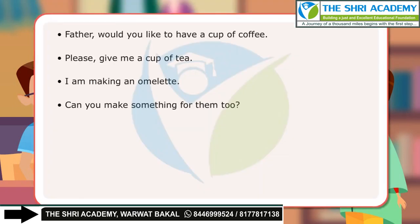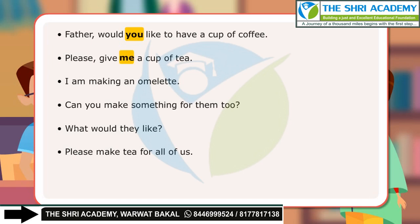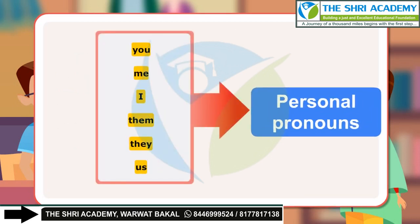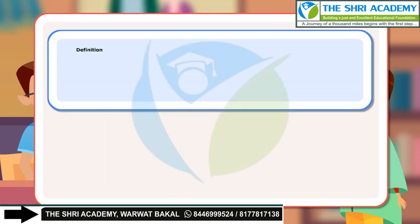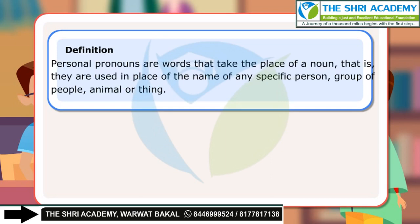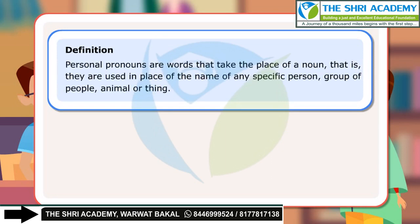In the conversation, father and Anu have used many words in place of a particular person or group of people. The words you, me, I, them, they, us are examples of personal pronouns. Definition: Personal pronouns are words that take the place of a noun — that is, they are used in place of the name of any specific person, group of people, animal or thing.